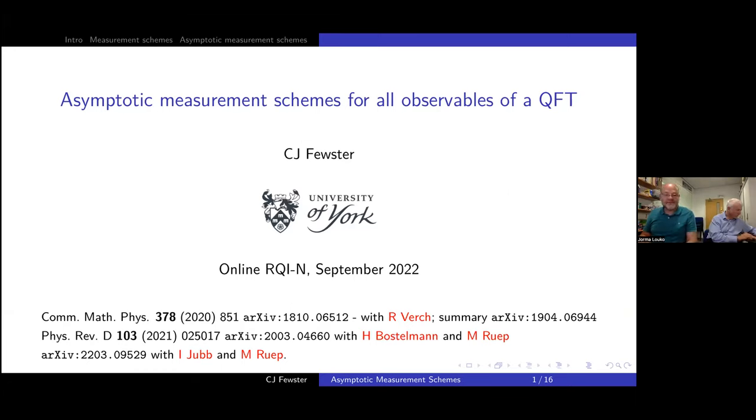The last speaker of this session is Chris Fuster from the University of York, titled Asymptotic Measurement Schemes for All Observables of AQFT. Thank you very much, Jorma, and thank you to the organizers. I also have to apologize for not being able to be here so much this week. So I'm going to talk on the subject Jorma mentioned. This is a continuation of a research program that I started with Rainer Fersh and continued with Henning Bosterman and Maximilian Rook. And the talk today is based on a preprint with Ian Jobb and Maximilian.